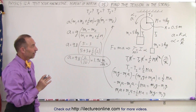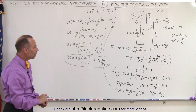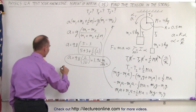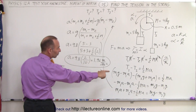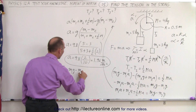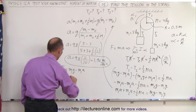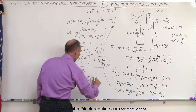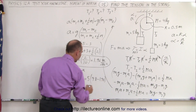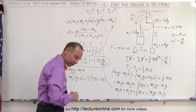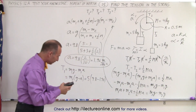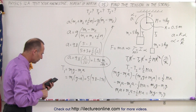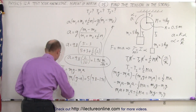At this point we don't need the angular acceleration yet, because we can now find T1 and T2. T1 is equal to m1·(g - a), which is 5 × (9.8 - 1.96). Using a calculator: 9.8 minus 1.96, times 5 equals 39.2 Newtons for T1.